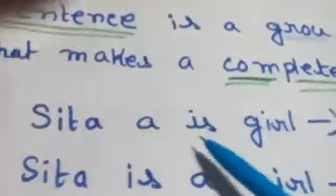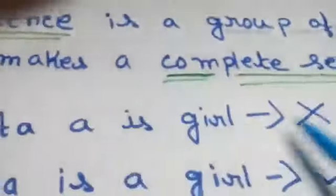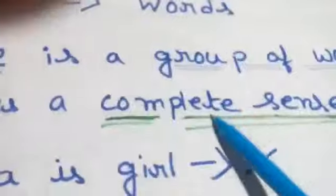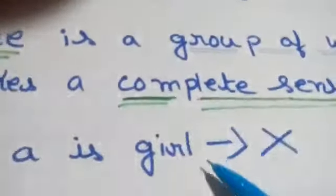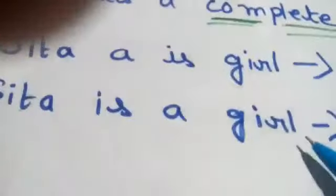So here we join the words: 'SITA A is GAL.' But this is wrong — because in this sentence, it does not make a complete sense, and it is meaningless. But this one: 'SITA is a GIRL' — this one is a perfect sentence, because in this sentence there is a subject, verb, and meaning also.